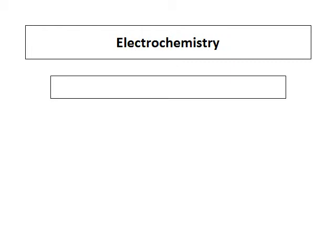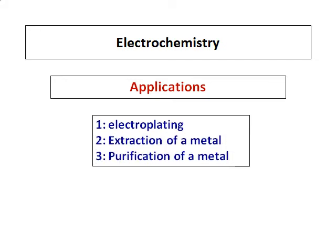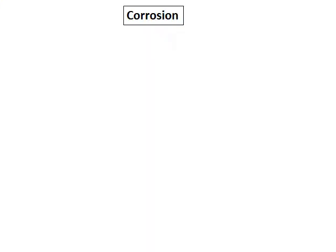We will continue with electrochemistry and learn some applications. One of the applications is electroplating. We can use electrolysis for extraction of a metal and also for purification of a metal. Before we go into the applications, we will learn something called corrosion.